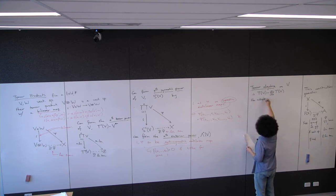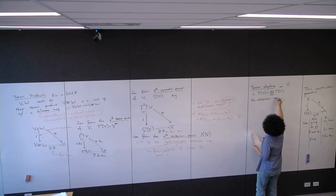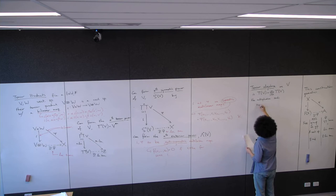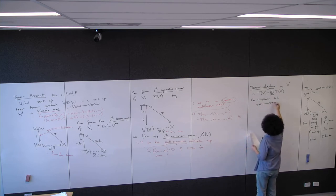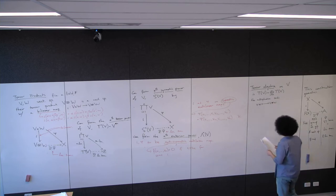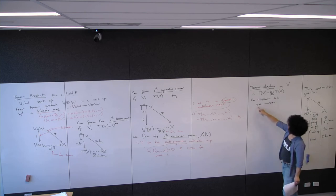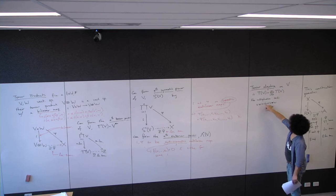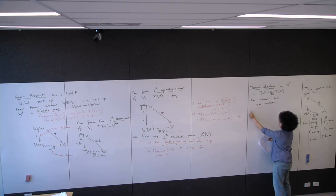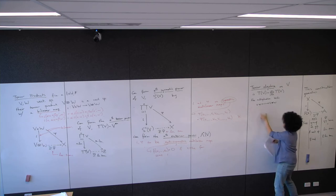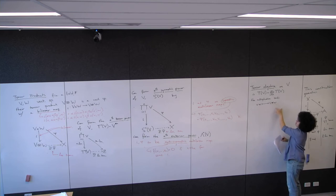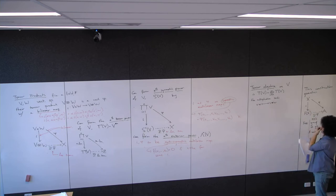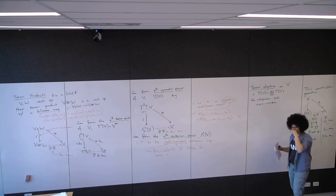The multiplication sends v · w to v ⊗ w. Here v is in T^m(V) and w is in T^n(V), so this is a tensor of things, and you end up with something in T^{m+n}(V). This is in fact a graded algebra.